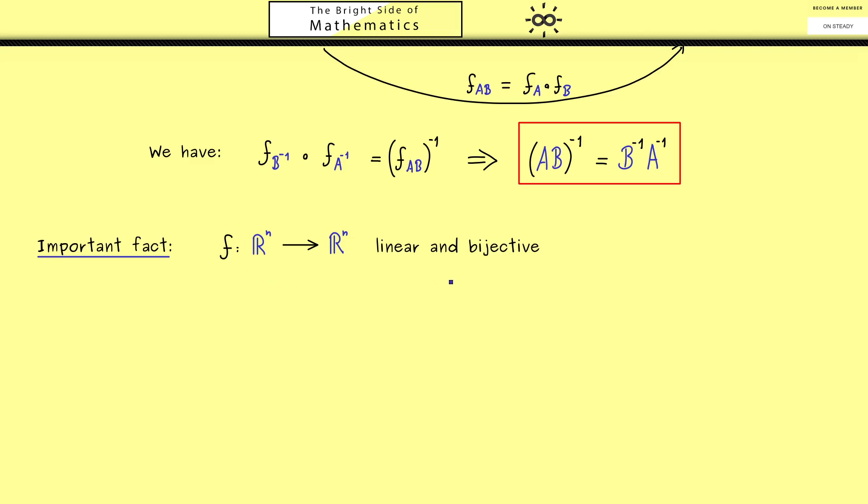However, now in addition we also assume that the map F is a bijective map. This means then that the map F inverse is well-defined. But now the important conclusion is that F inverse is also a linear map. This means that F inverse also conserves the linear structure of the vector space. In some sense, this fact we have already seen in the matrix picture from above. However, now we want to give an abstract proof of this fact.